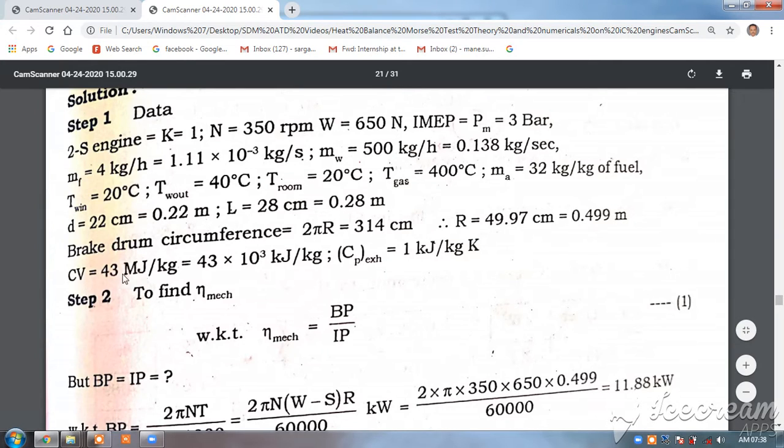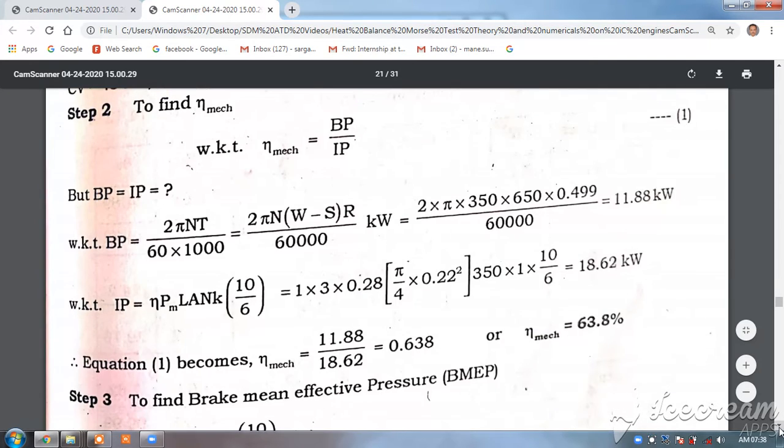Calorific value is 43 MJ/kg, that is 43×10³ kJ/kg. Cp_exhaust = 1 kJ/kg·K. Now to find mechanical efficiency η_mech = BP/IP. But we do not know what is BP and IP, so we will calculate BP and IP with the standard formulas.